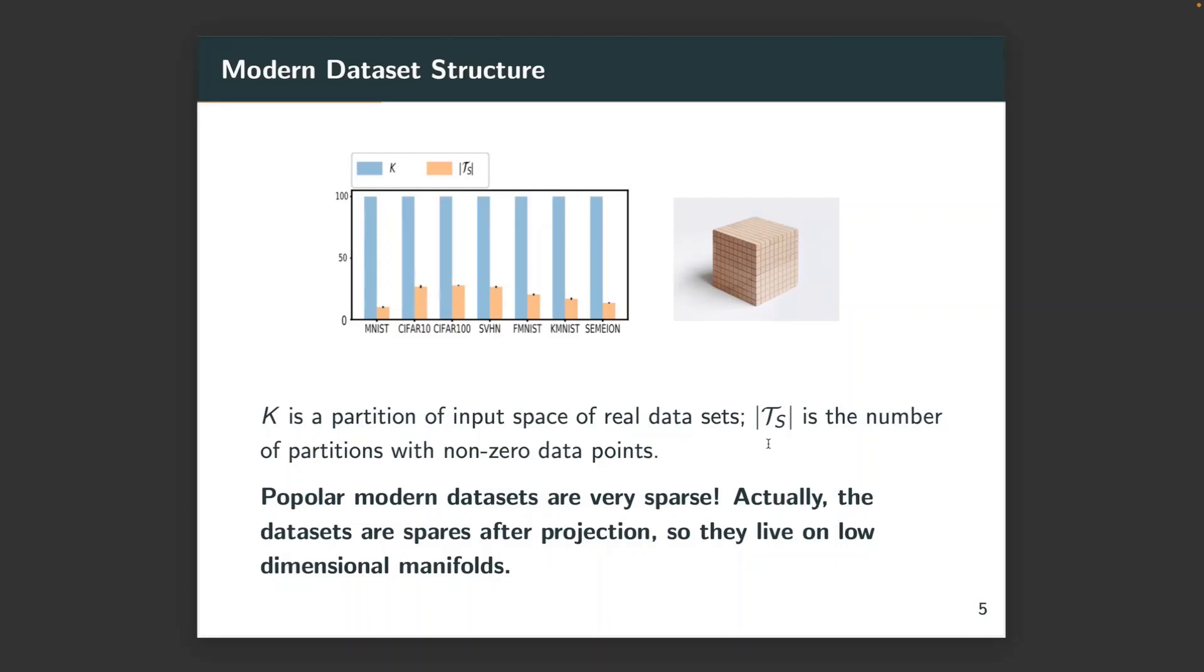To further illustrate modern dataset structure, here we provide some preliminary experimental results. Let K be a partition of input space of real datasets, and |Ts| be the number of partitions with non-zero data points. One can think that we partition the space with small cubes or epsilon coverings in the infinite norm. In this plot, the figure shows the values of K versus the cardinality of |Ts| for real-life datasets.